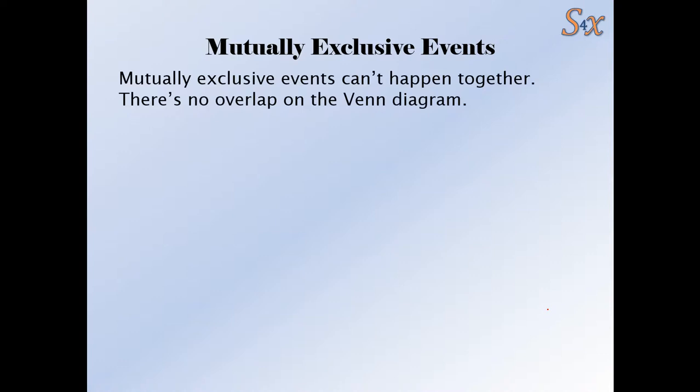I'm going to look at mutually exclusive events now and what they are. So mutually exclusive events can't happen together. Only any one person can only do one of them. An example might be being in year 12 and being in year 13. You can be in year 12 or in year 13, but you can't be in both.